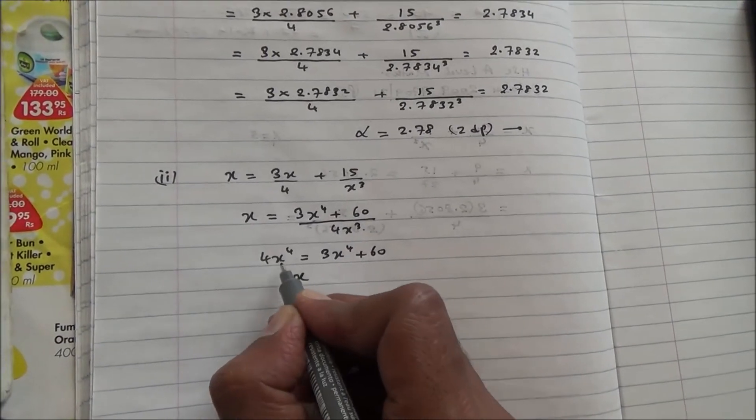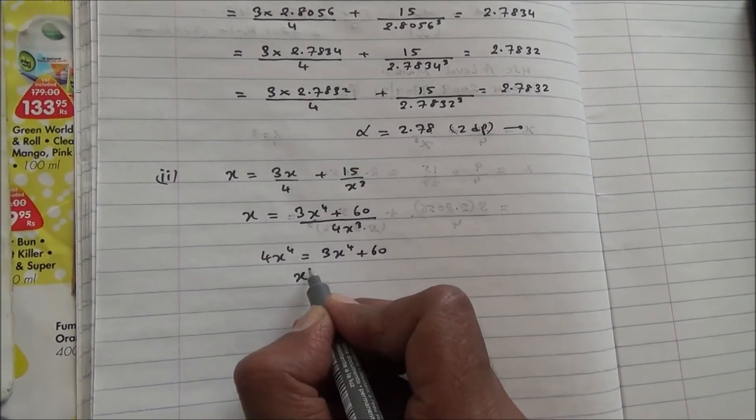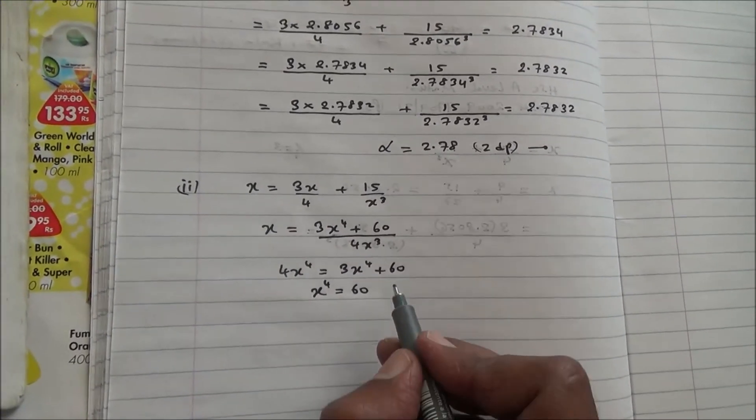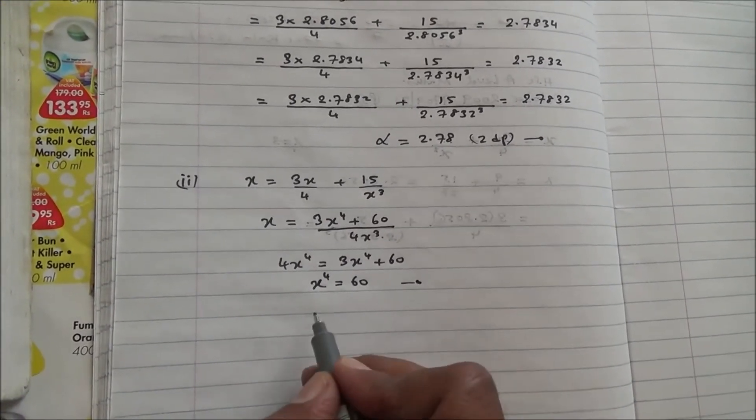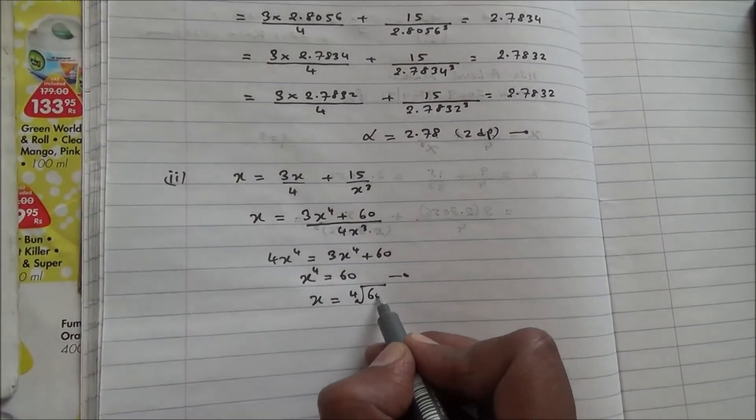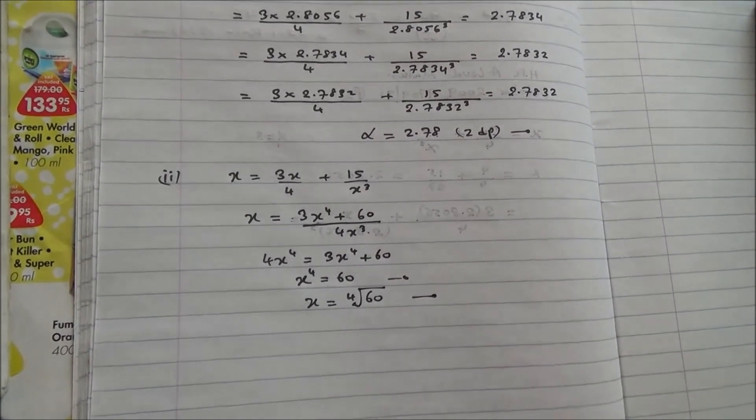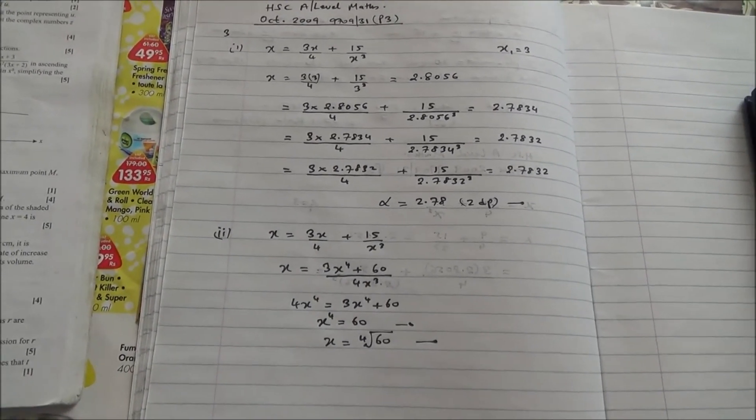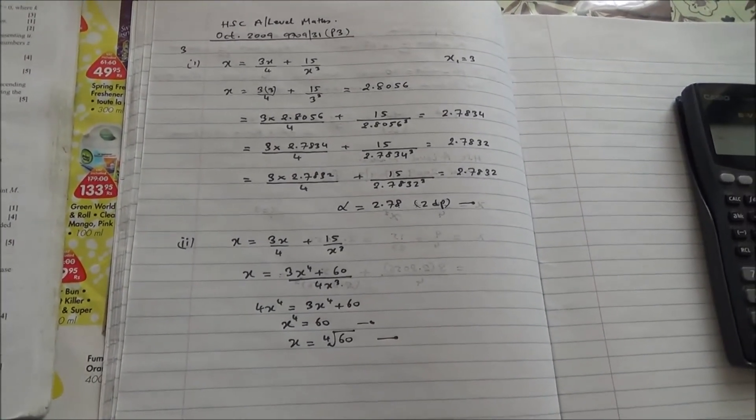So we have then 4x power 4 minus 3x power 4, which is x power 4 equals 60. So this is the equation. And the exact value is going to be then the 4th root of 60. And here we are for the second part of this question taken from, as I said before, October 2009, A Level Maths, Paper 3.